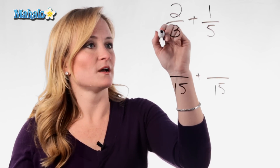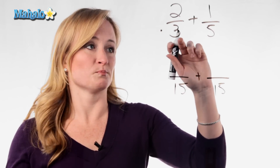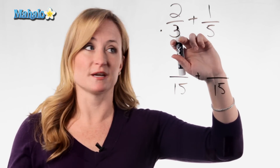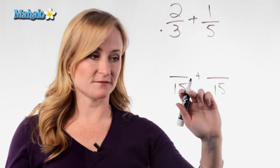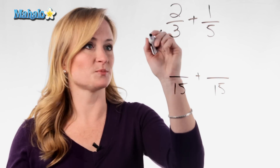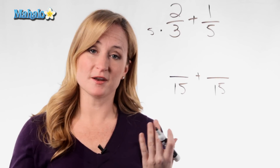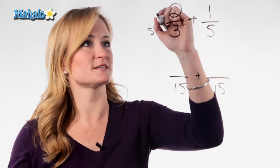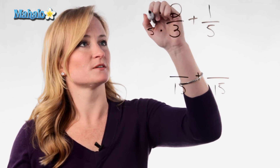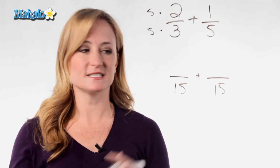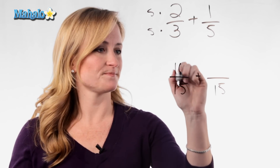This denominator, or bottom number, was a 3. How did I make it a 15? Multiply it by 5. And what you do to the bottom, you must do to the top. So 2 times 5 is 10.